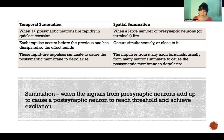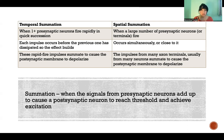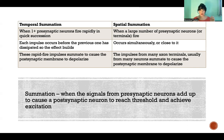It could be only one presynaptic neuron or it can be multiple, but it just means that the presynaptic neurons are firing so quickly that each impulse is occurring before the previous ones have had a chance to dissipate. That means the effect builds and builds.